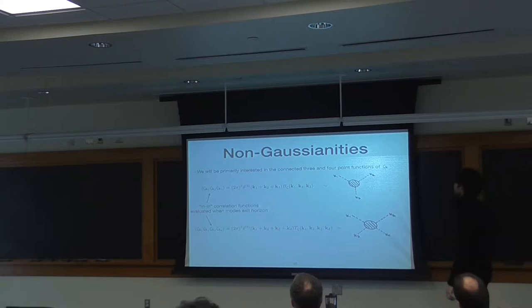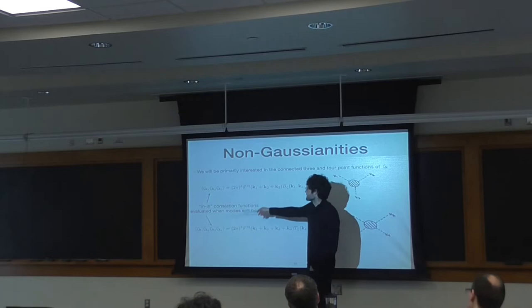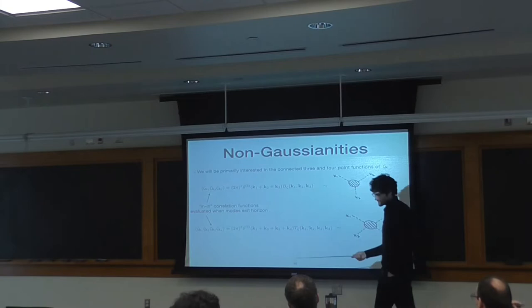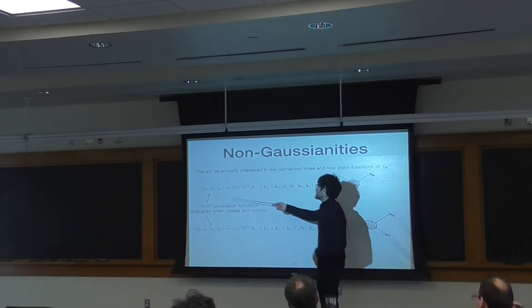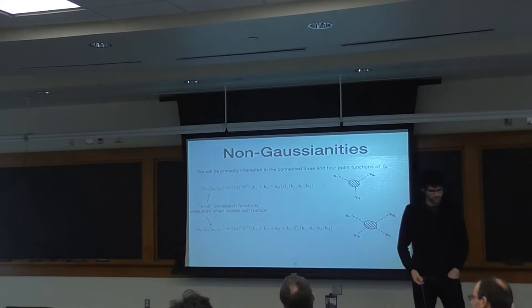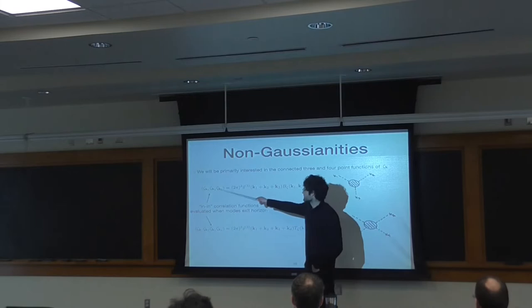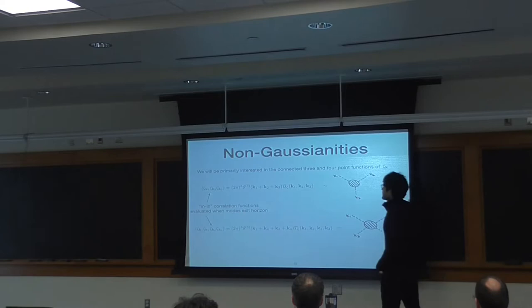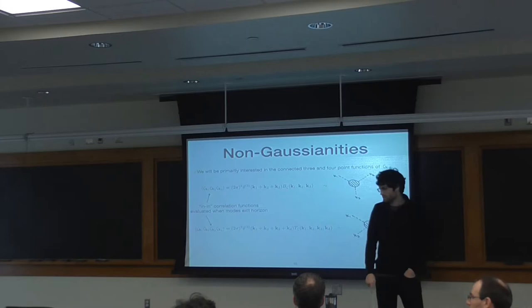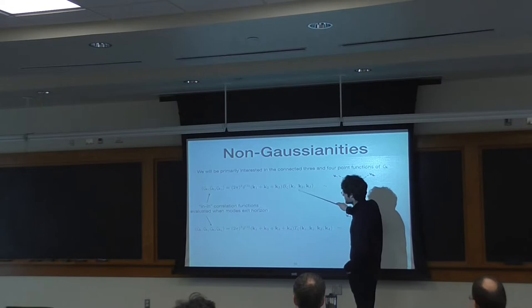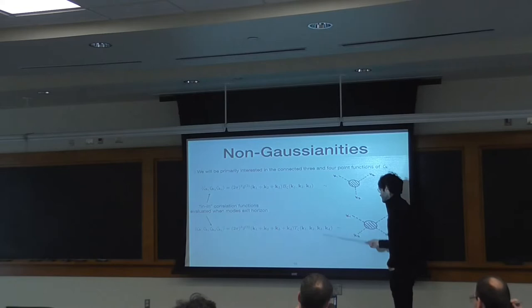We'll be primarily interested in the three- and four-point functions of the field zeta — specifically the expectation values of zeta evaluated right at the time inflation ends. This is what sets up the initial conditions for the subsequent evolution of the universe. These expectation values are different from standard scattering amplitudes, which involve in and out states taken to minus and plus infinity. We evaluate these at a common time using the Schwinger-Keldysh in-in formalism. Because inflation has spatial translational invariance, these correlators satisfy a momentum-conserving delta function. What multiplies these delta functions is the bispectrum for the three-point function of three wave vectors, and the trispectrum for the four-point function of four wave vectors.